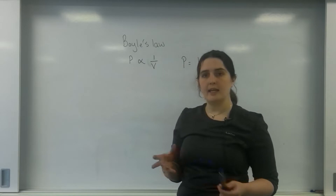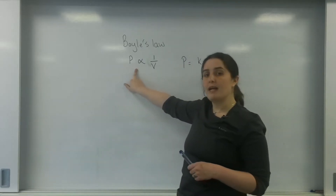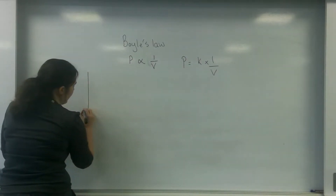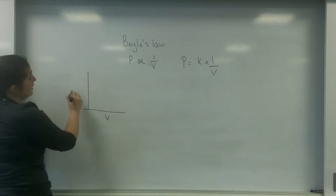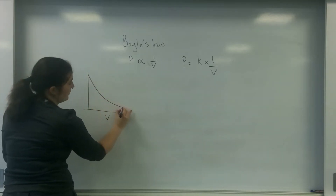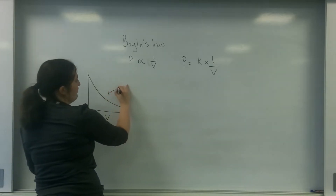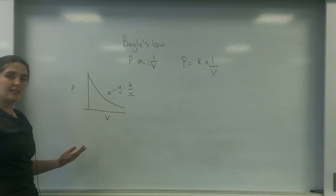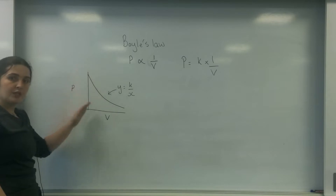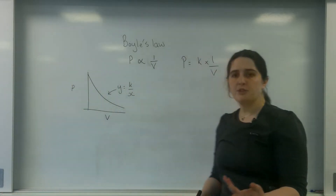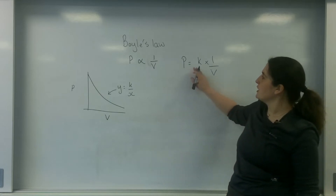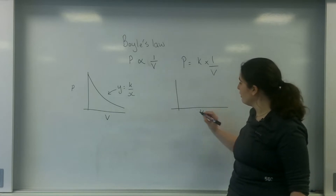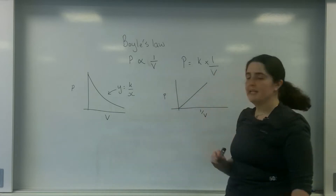When Boyle measured, he worked out that the pressure was directly proportional to 1 over the volume. When looking at the volume of an object versus the pressure, the kind of graph you get is a y equals a constant over x graph — you get this curve. What this is saying is as the volume increases, the pressure decreases. If I write this out differently, pressure equals a constant times 1 over volume. So if I plotted 1 over volume against pressure, I would end up with a lovely linear graph.